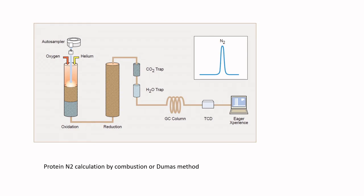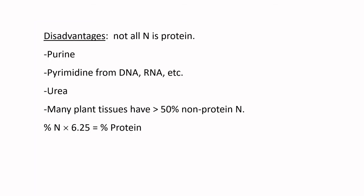We're also capable of measuring the nitrogen within a product by the combustion or Dumas method. That's where we take an accurately weighed portion of sample and drop it into an oxidation chamber and burn it, then reduce it and trap carbon dioxide and water vapor. We run it through a column and measure the quantity of nitrogen gas coming off, and correlate the quantity of sample applied to the quantity of nitrogen gas evolved. The big challenge is that not all nitrogen comes from protein inputs.